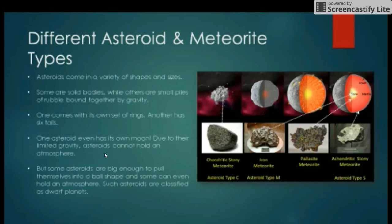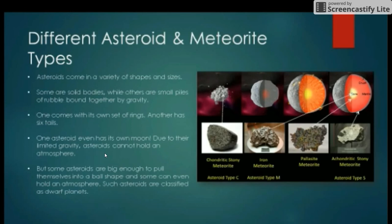Asteroids come in a variety of shapes and sizes. Some are solid bodies while others are small rubble piles bound together by gravity. One comes with its own set of rings, another has six tails, and one asteroid even has its own moon.